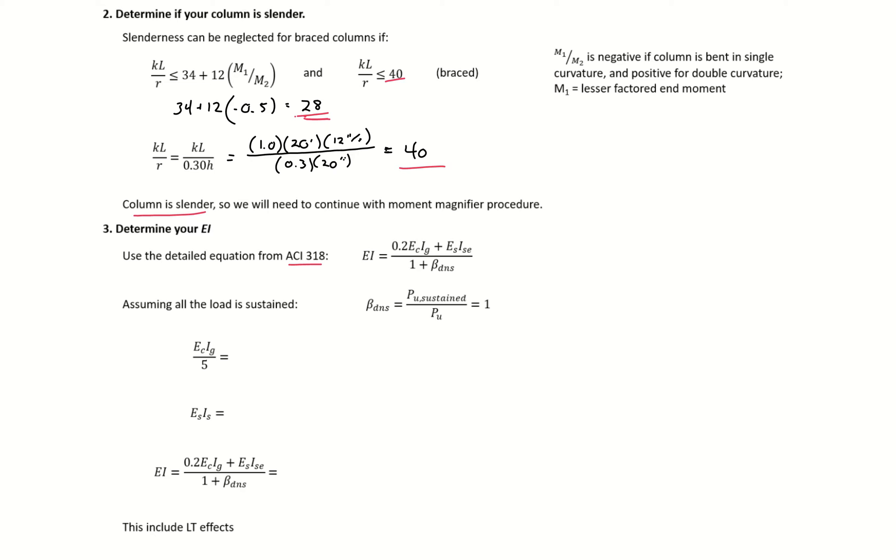Our concrete component is E_c times I_g over 5, so 57,000 times the square root of 4,000 psi divided by 1,000 pounds per kip, times B times H cubed divided by 12. This gives us a value of 5.77 times 10^6 kip-inches squared.